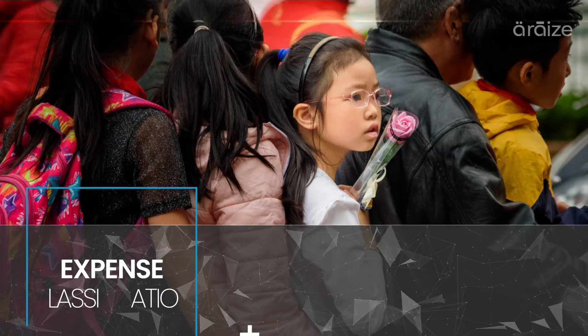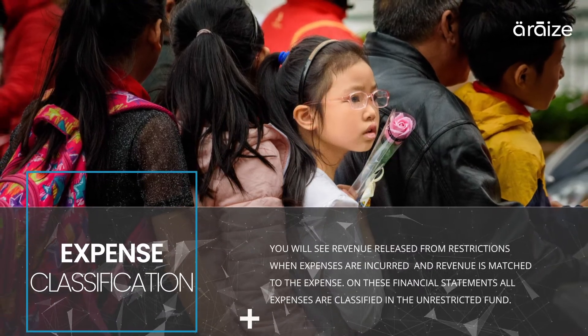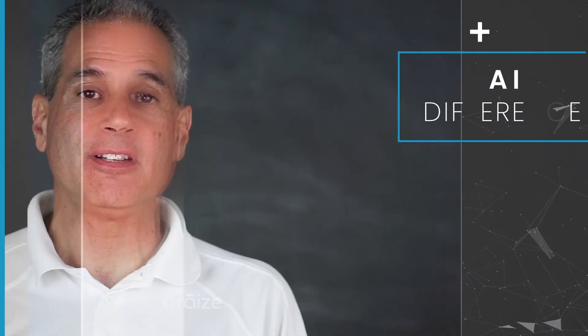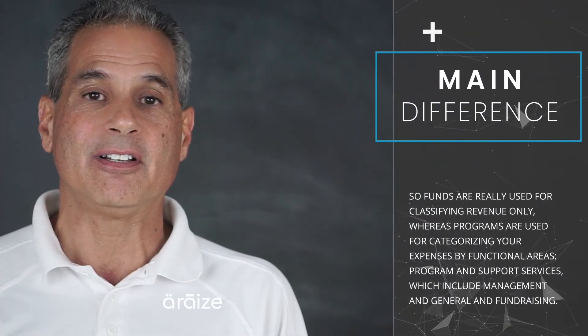What you will see is revenue released from restrictions from the designated funds to the unrestricted fund when expenses are incurred and revenue is matched to the expense. And all expenses are classified in the unrestricted fund. So funds really are for classifying revenue only.